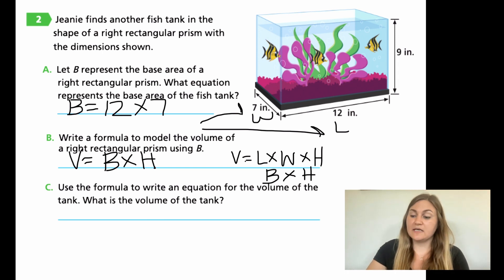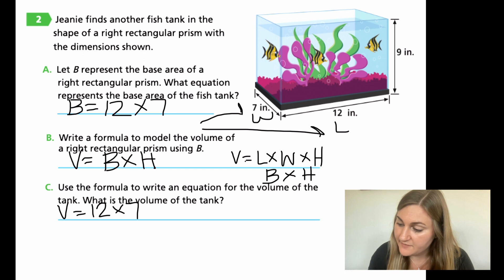So moving down to C, use the formula to write an equation for the volume of the tank. So now it's going back to the problem mentioning the tank. So in this problem, you're going to have your volume and it's going to be equal to your length is going to be 12. Your width is going to be seven and your height is going to be nine. So what I need to do is now I need to multiply.